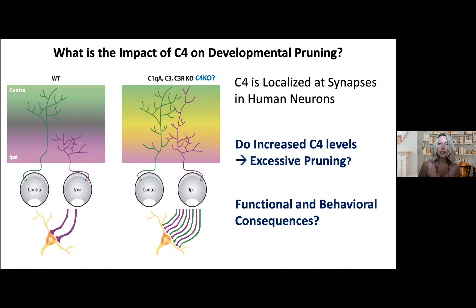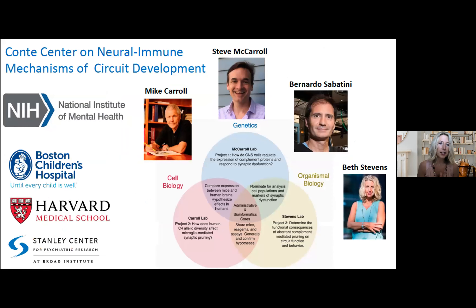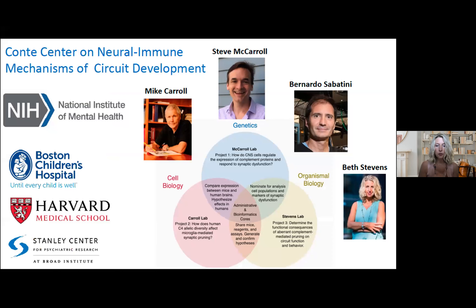The question is whether increased C4 — which is what the genetics were showing — could lead to excessive synaptic pruning, or what the functional consequences are of having too much of a good thing. This is ongoing work, but I wanted to share some work from the last year or two, recently published, to show how we're approaching this through our collaborative effort in the Conte Center and the Stanley Center for Psychiatric Research.